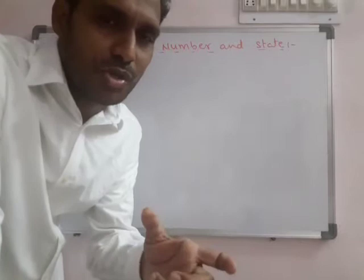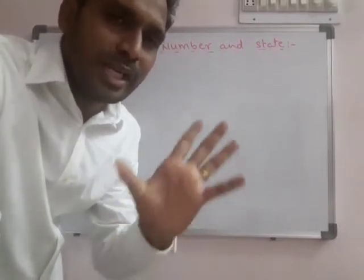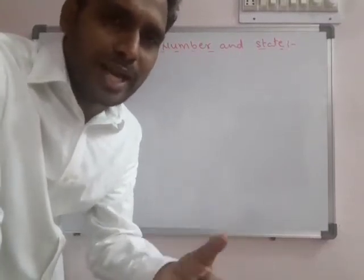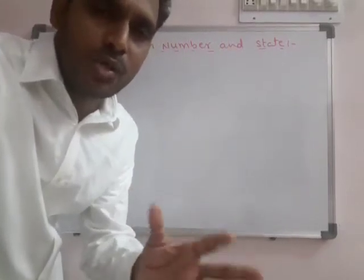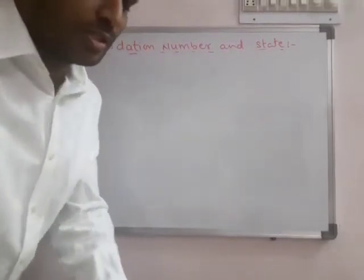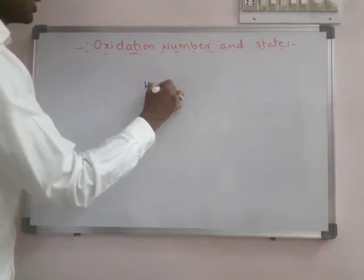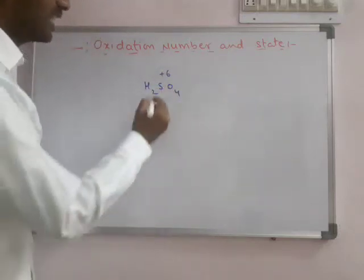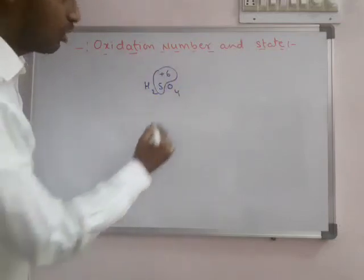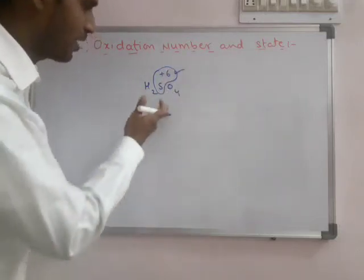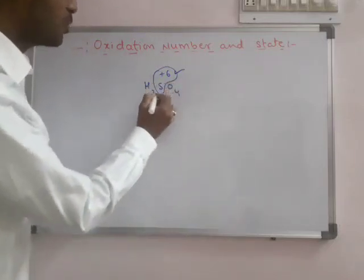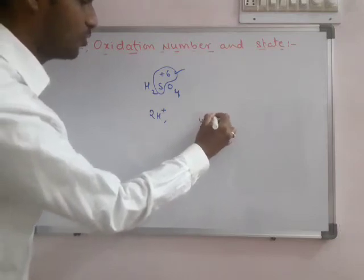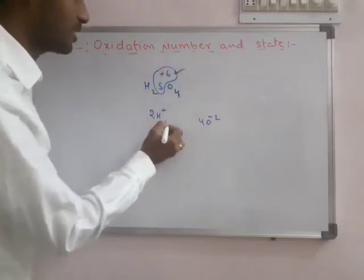When all other atoms of different elements are removed in the form of ions, the remaining charge on that element is called its oxidation number or state. For example, in H2SO4, the sulfur oxidation number is plus 6. The two hydrogens are removed in the form of 2H+ and four oxygens are removed in the form of 4O2−, so finally the residual positive charge on sulfur is plus 6.